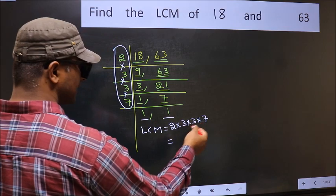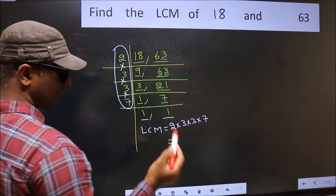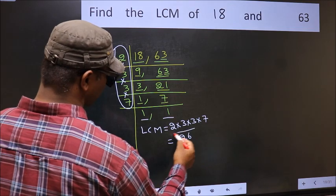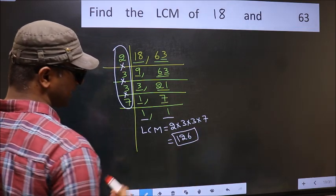When we multiply these numbers, we get 126 is our LCM.